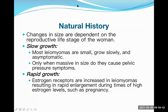Now let's talk about the natural history of uterine fibroid. Changes in size are dependent on the reproductive life stage. Leiomyomas are hormonal-dependent tumors — they rely on estrogen for their growth. If estrogen supply is good, they grow consistently. If we cut the estrogen supply, these tumors will atrophy and become small. That's why they are common in the reproductive age group.